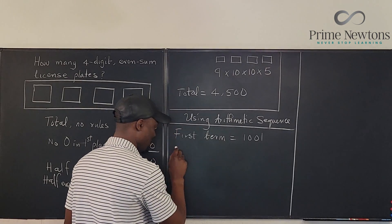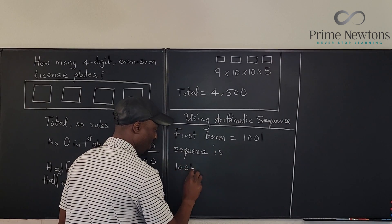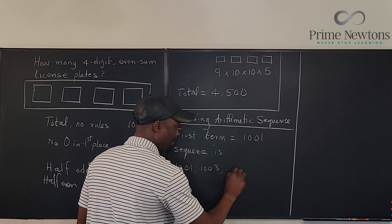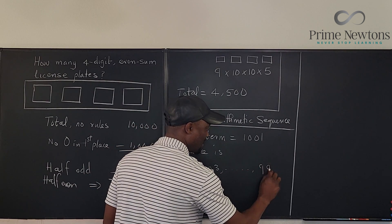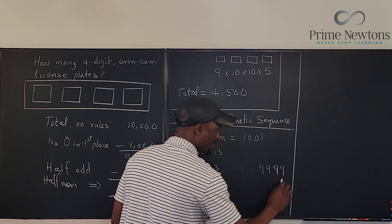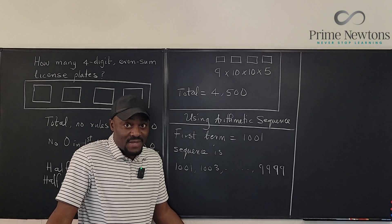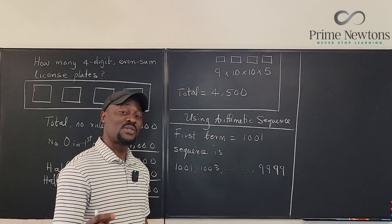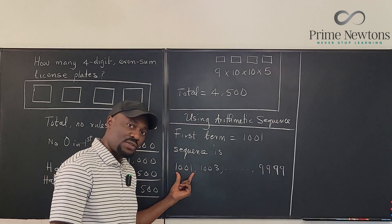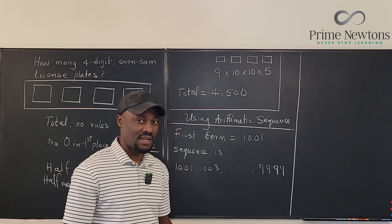So it looks like the next number is going to be 1,003. So the sequence is 1,001, 1,003, and you keep going until you get to 9,999. That's it. The only question you want to ask yourself is how many terms are in a sequence where the first term is 1,001 and the last term is 9,999.